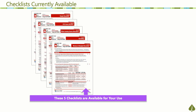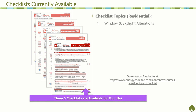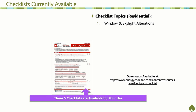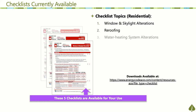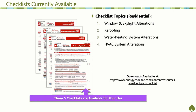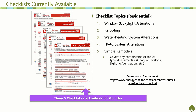There are five checklists included in your climate zone packet. Each checklist will cover the 2019 energy code requirements for a different type of residential alteration project. These projects are window and skylight alterations, re-roofing, water heating system alterations, HVAC system alterations, and simple remodels.